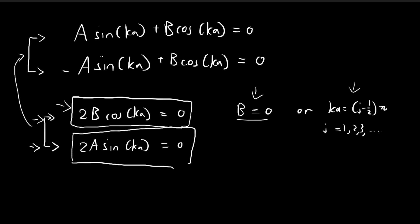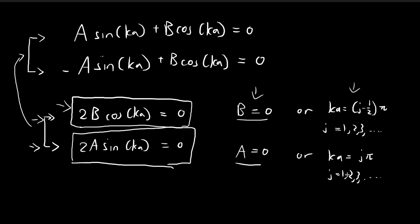For the second requirement, 2A·sin(ka) = 0, there are again two possibilities: either A = 0, or ka = jπ where j = 1, 2, 3, and so on. For example, if j = 2, then ka = 2π, and sin(2π) = 0. Either condition being true will satisfy this second statement.